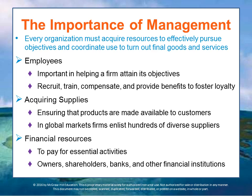The manager also needs adequate financial resources to pay for essential activities. Primary funding comes from the owners and shareholders — people that own the business provide basic funding. But there are also banks and other financial institutions that provide funding. All of these resources and activities must be coordinated and controlled if the company is to earn a profit, and managers must carefully coordinate their use to achieve the organization's objectives.